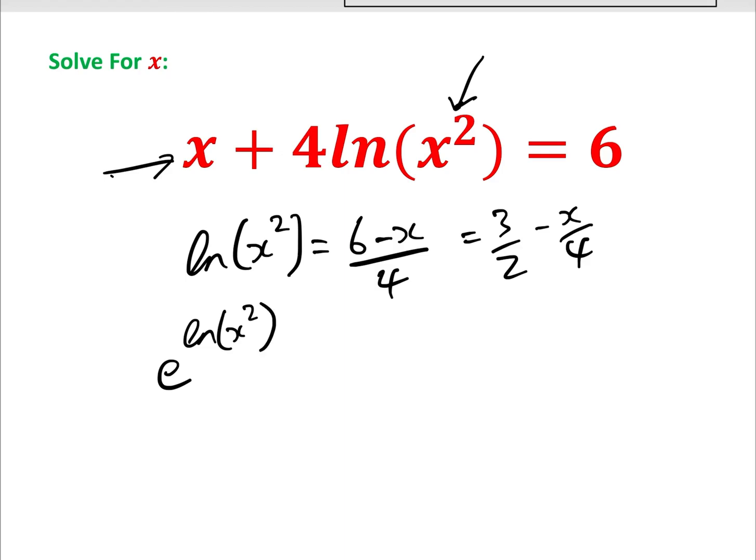We get e to the log x squared equals e to the 3 over 2 minus x over 4, which equals e to the 3 over 2 times e to the minus x over 4. And of course, e to the log of anything just equals anything. So we have x squared equals e to the 3 over 2 times e to the minus x over 4.